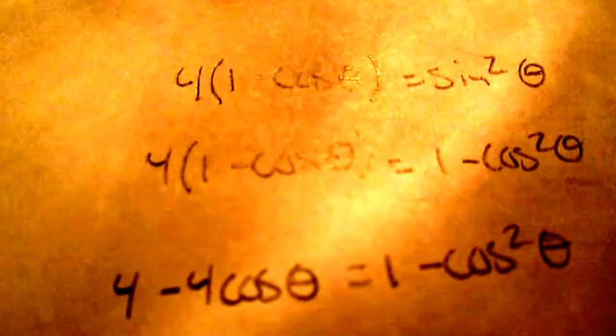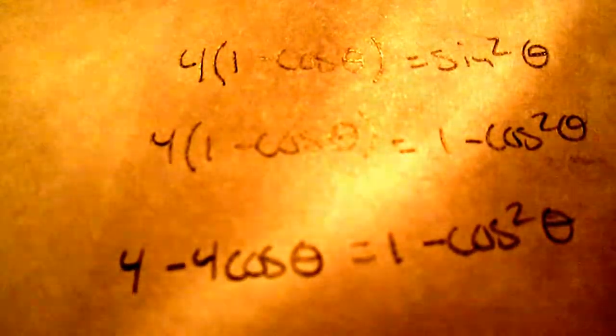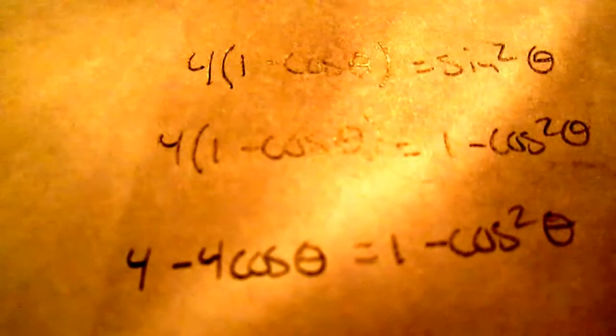Then what we're going to do is distribute the 4. 4 minus 4 cosine theta equals 1 minus cosine squared theta. And then subtract 1 minus cosine squared theta to set it to 0.